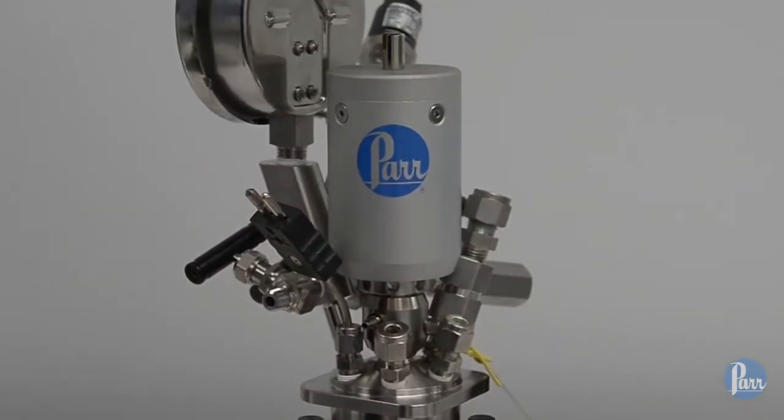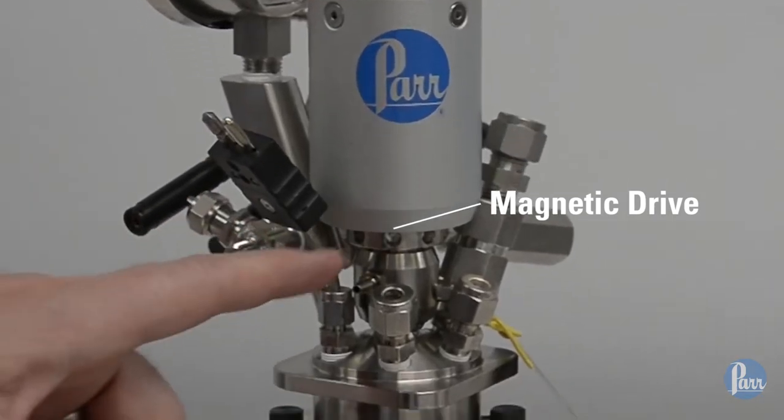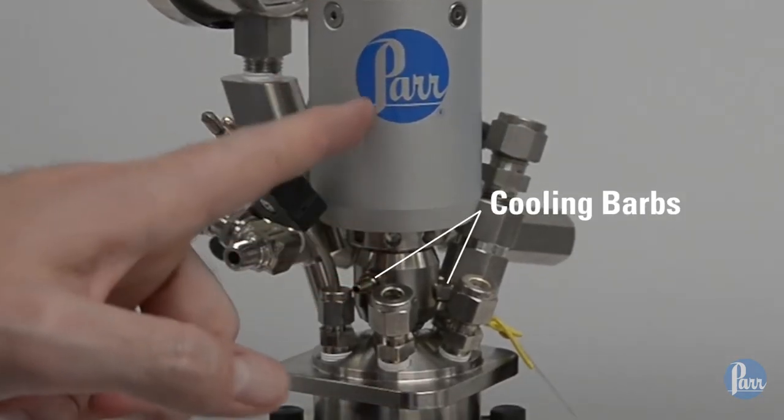Along with the central magnetic drive connected to the overarm with cooling sleeve barbs to keep the magnets cool inside the magnetic drive. What you've seen today is the standard head configuration for a Parr reactor.